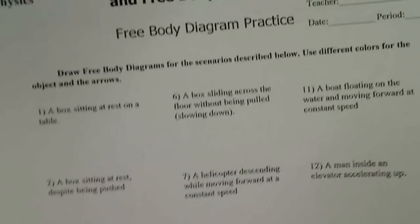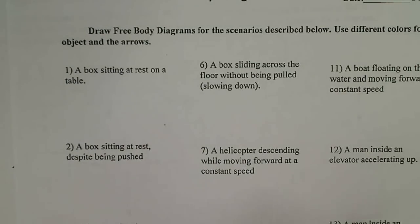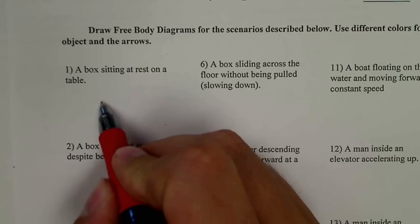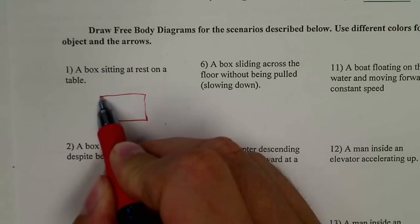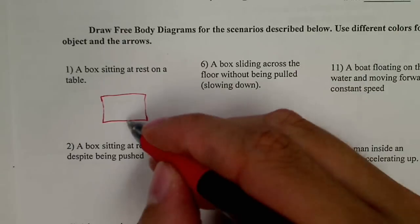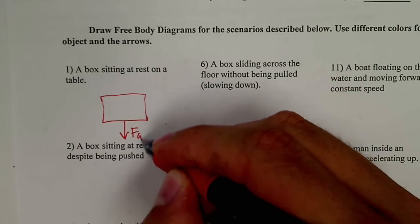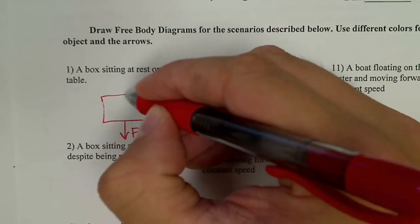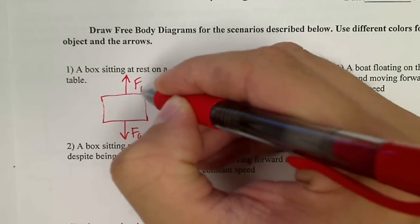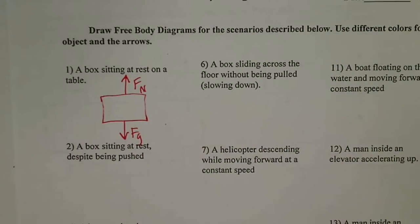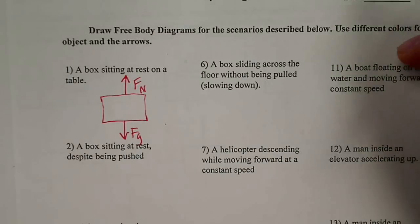So let's practice with drawing some of our own. If we have a box sitting at rest on the table, we draw our object. There is a force of gravity pulling down, and an equal and opposite force normal of the ground pushing back up. No forces on the horizontal.